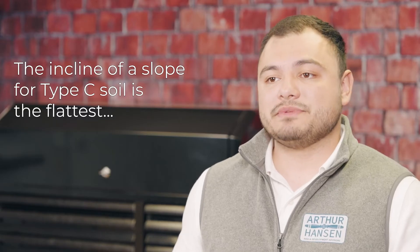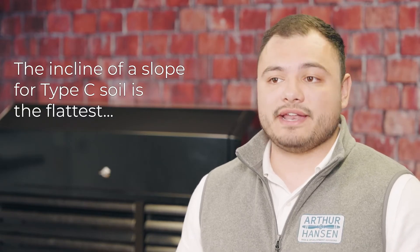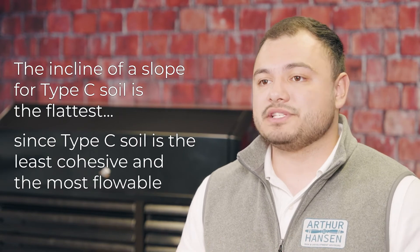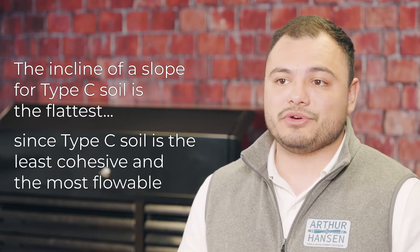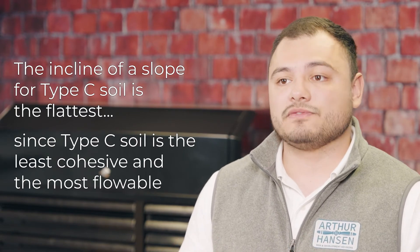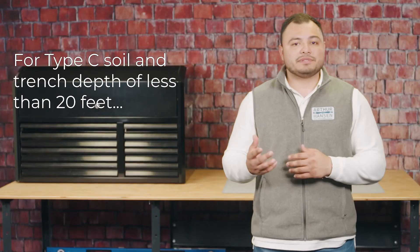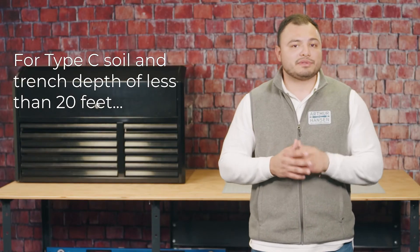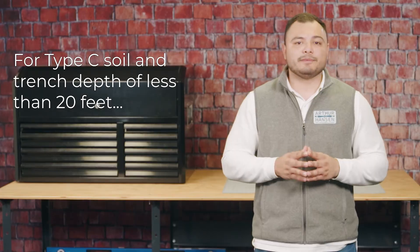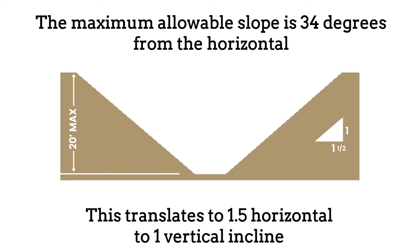The incline of the slope for type C soil is the flattest since type C soil is the least cohesive and the most flowable. For type C soil and a trench depth of less than 20 feet, the steepest maximum allowable slope is 34 degrees from the horizontal. This translates to one and one-half horizontal to one vertical incline and is shown on the screen now.